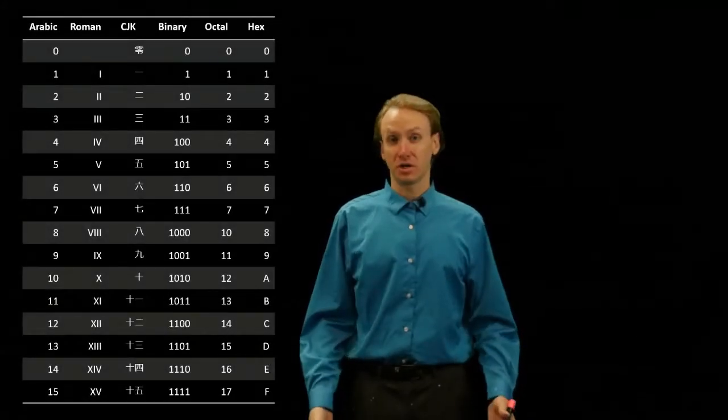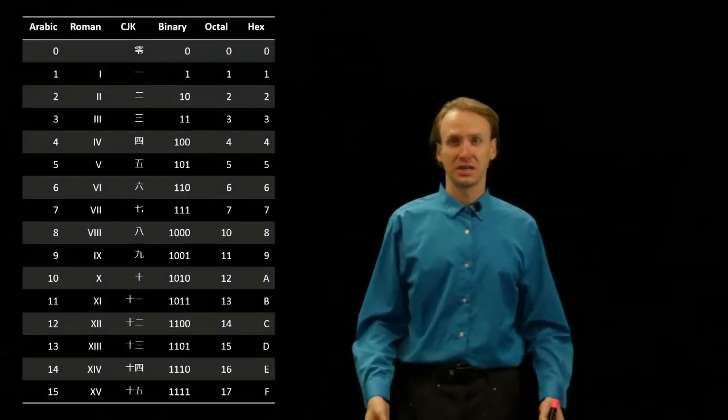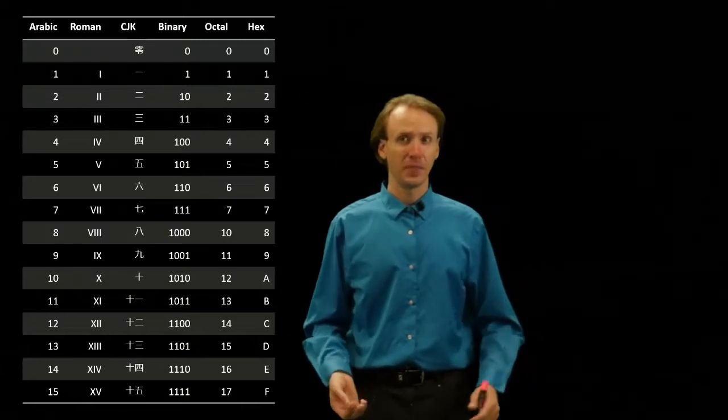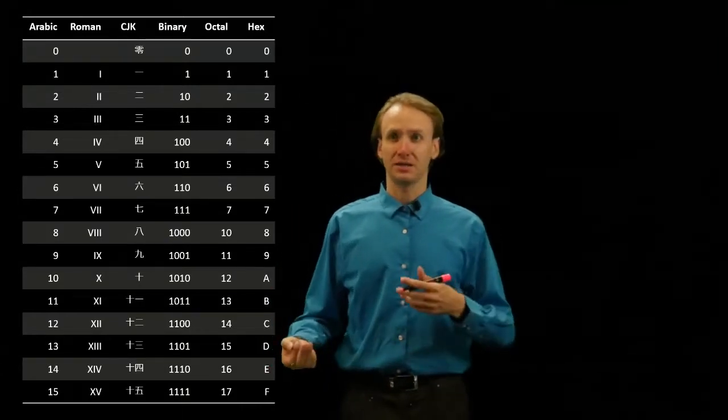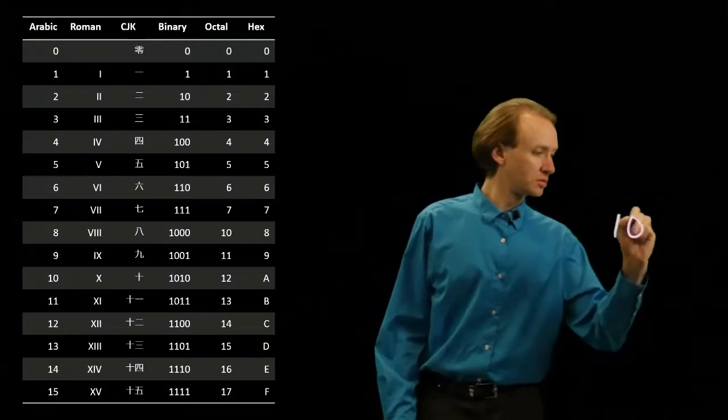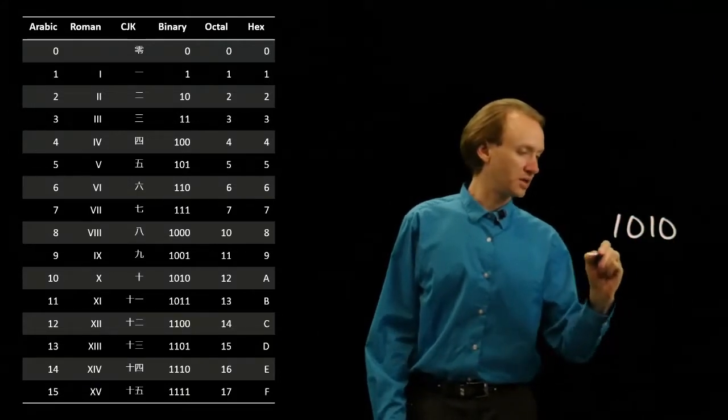For this example, we'll start with a couple of small numbers, say 10 minus 7. So, 10 in binary is [writes value], and 7 is [writes value].